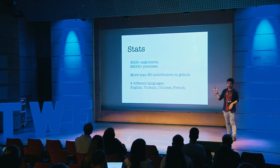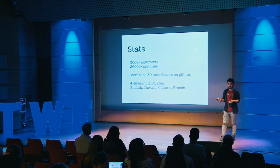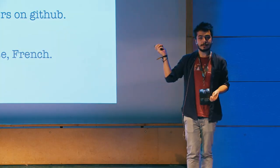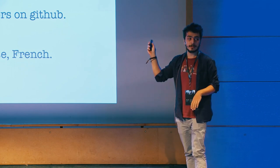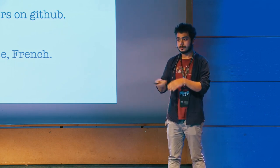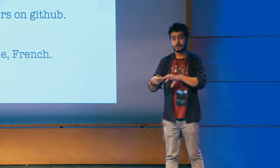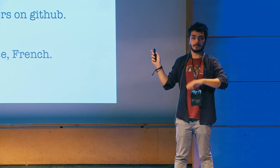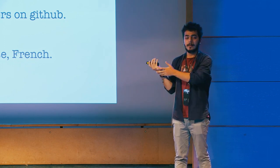There are some statistics. Argument is an open source project, so you can get it and run it for your own campaign or decision-making. For example, if you want to change your coffee machine in the kitchen, you can run this website for your campaign and discuss it there. We have more than 30 contributors on GitHub. It's running on several domains used by companies and schools. It's available in four languages: English, Turkish, Chinese, and French. You can help us make a Polish version too!